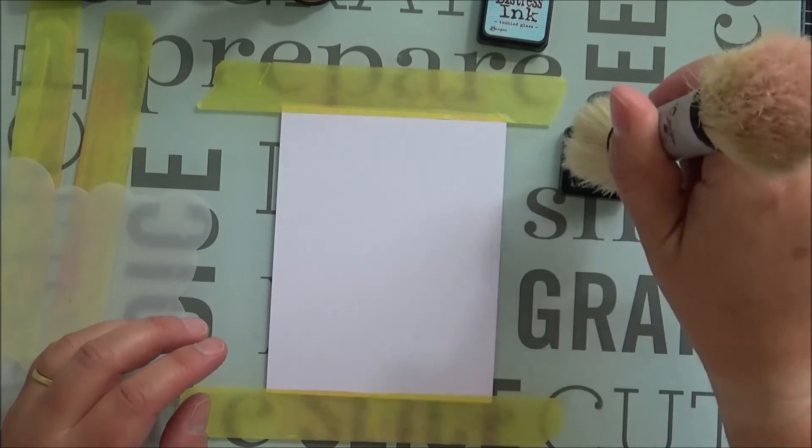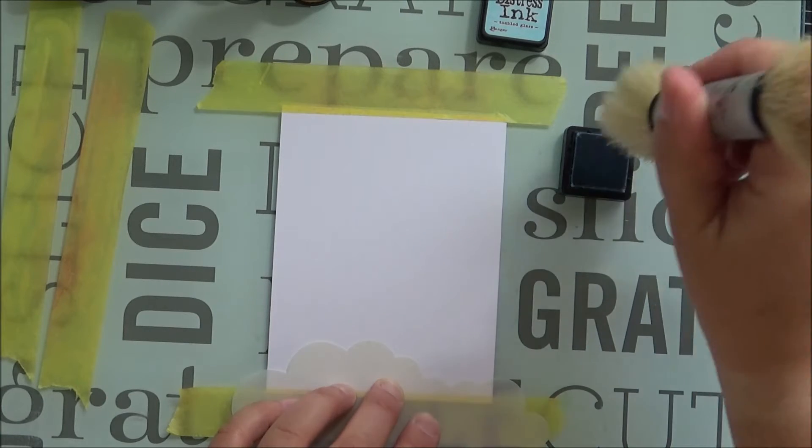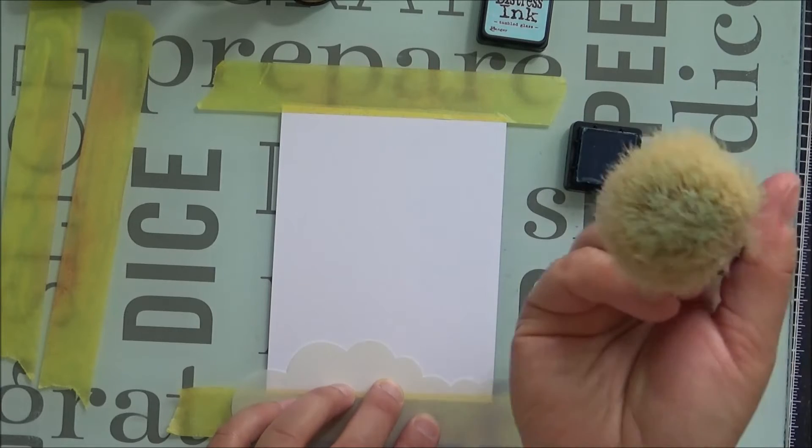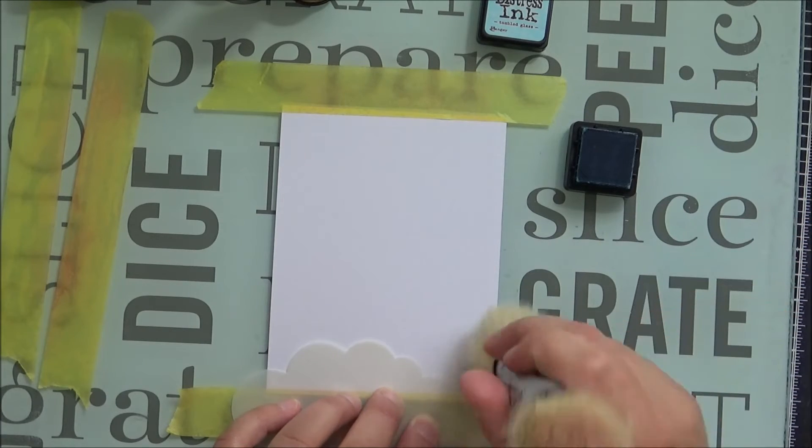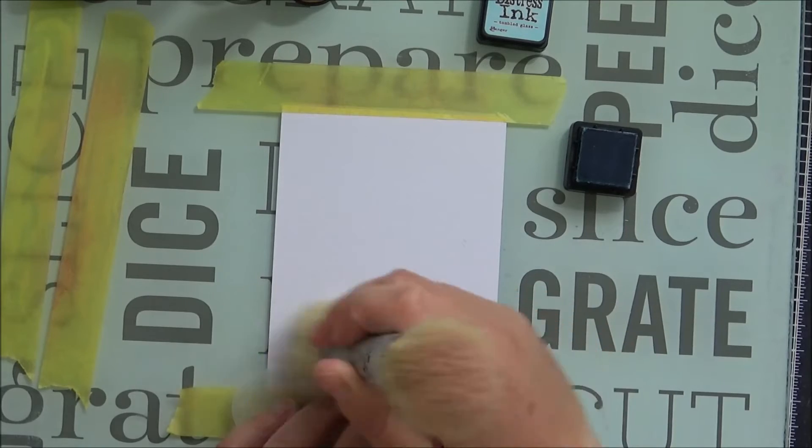If you try the same thing with the ink dusters, you get a bit of paper with lots of instructions on how to use these ink dusters. What you've got to do is it says you've got to dip, dab, and then dust.